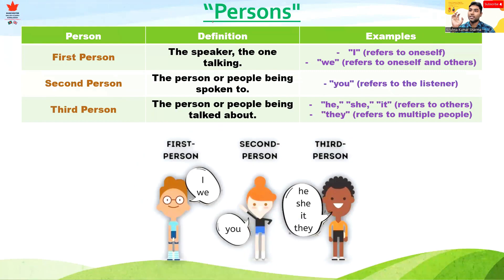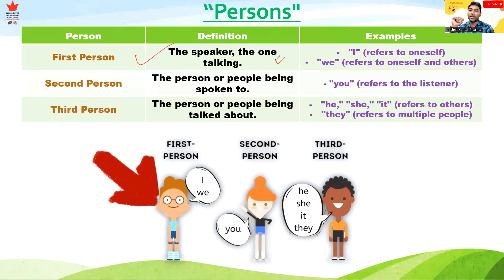Let's see the definition and an example of person. The first person is the speaker, the one talking. For example, 'I' refers to oneself, and 'we' refers to ourselves.